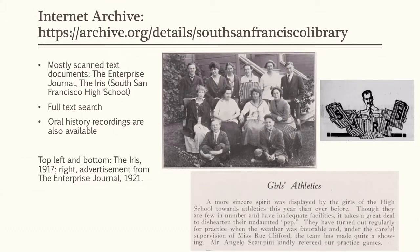The images here as examples include an advertisement from the Enterprise Journal circa 1921, and excerpts from the 1917 IRIS, which was a publication of South San Francisco High School. There are also a lot of other institutions that have contributed things to Internet Archive throughout California and throughout the world. It can be worth seeing if your local library or historical society has donated something. There's also a lot of websites catalogued in the Wayback Machine, so for historical research, Internet Archive is fantastic overall.